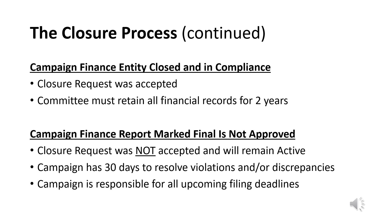Election Law Article Section 13-221 requires all treasurers to preserve detailed and accurate records of a campaign finance entity until two years after the entity files their final report and it has been approved by the state board of elections. If the committee later decides to conduct future campaign finance activity, they must establish a new political committee with SBE prior to the occurrence of any financial transactions.